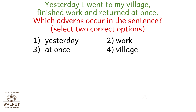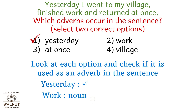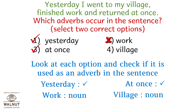Yesterday, I went to my village, finished work and returned at once. Which adverbs occur in this sentence? Select two correct options. Yesterday — yes, that's an adverb. Work is a noun, so option 2 is cut out. At once is an adverb — correct. Village is a noun, so option 4 is cut out. The correct answer is options 1 and 3.